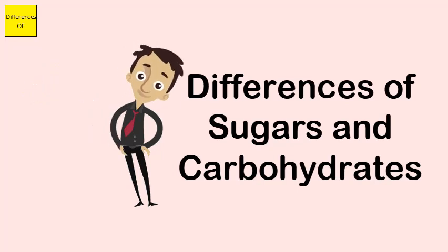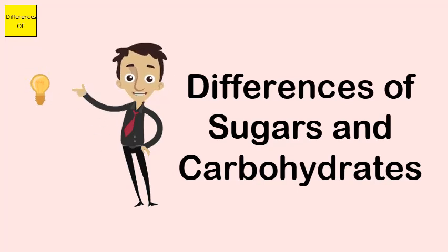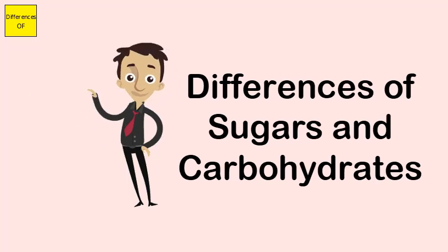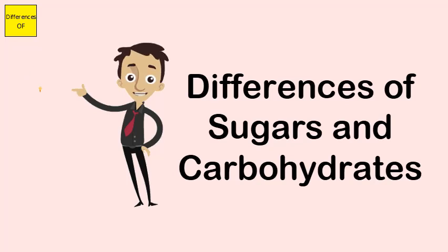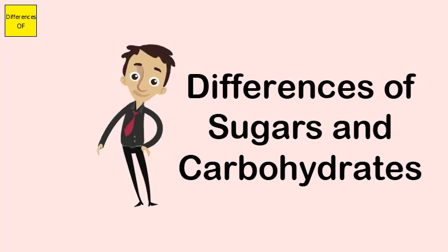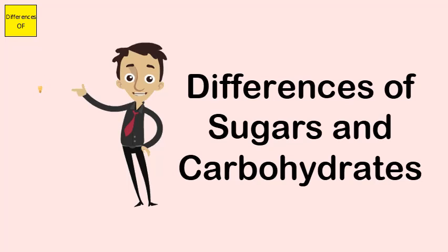Examples of sugars include table sugar, fruit juice, milk, yogurt, molasses, brown sugar, and honey. Examples of carbohydrates include starch and cellulose.